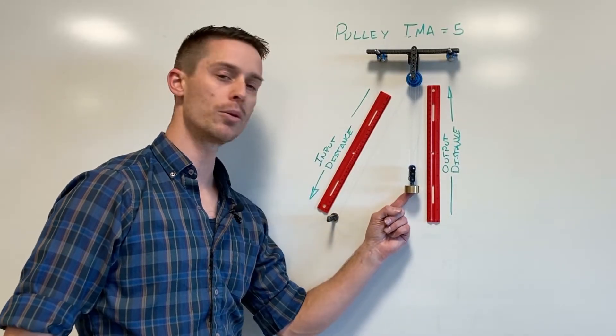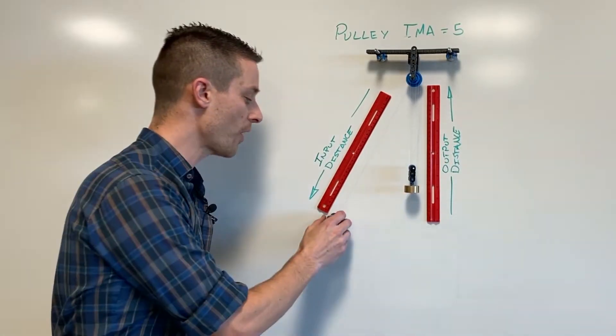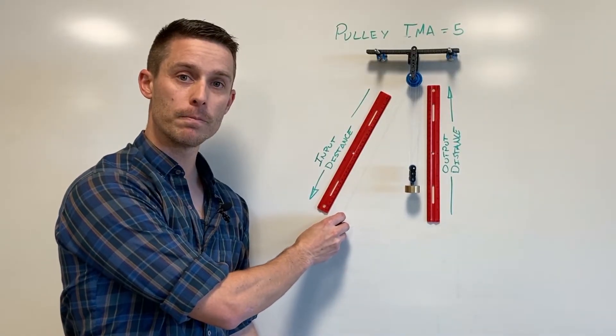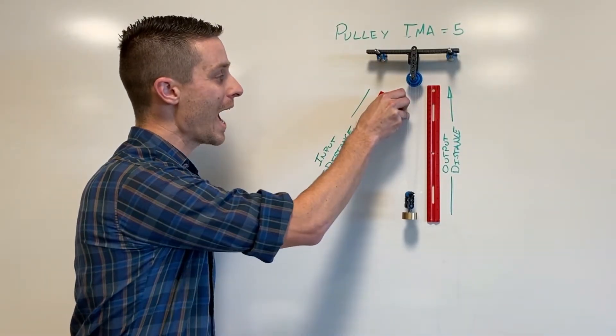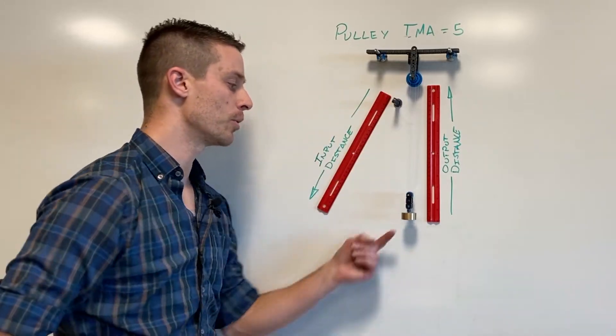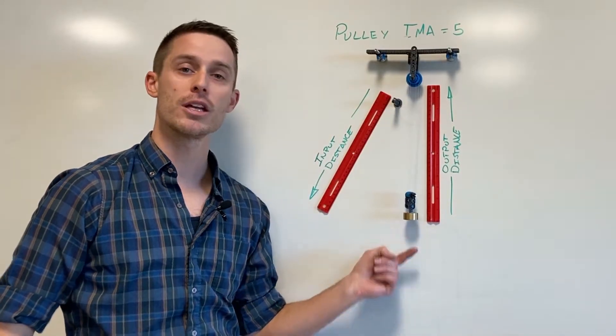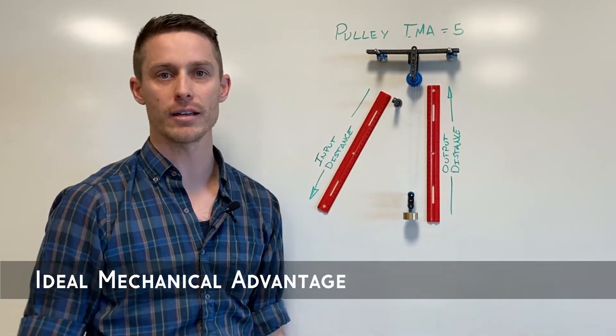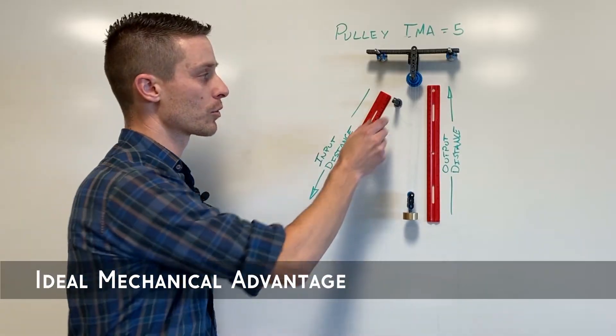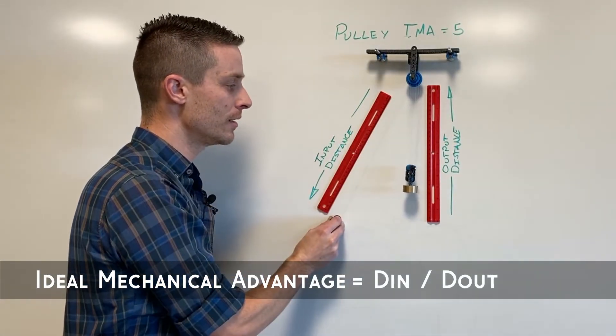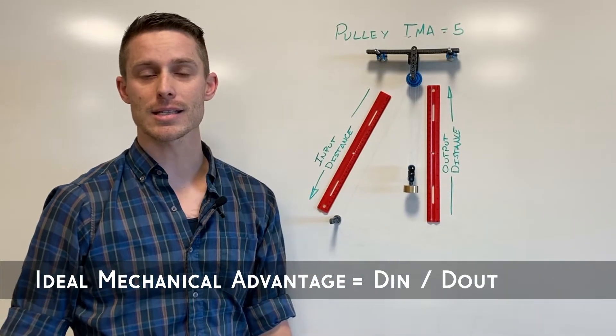What that means is the load only moves one-fifth as far as the input and that difference between how far the input moves and how far the output moves is what we call ideal mechanical advantage or really that is the ratio of the distance in divided by the distance out.